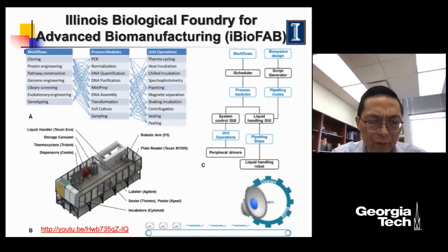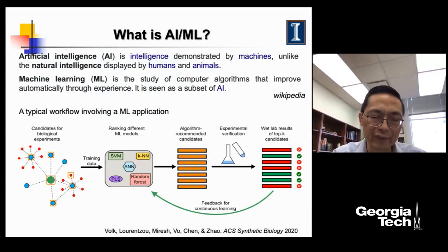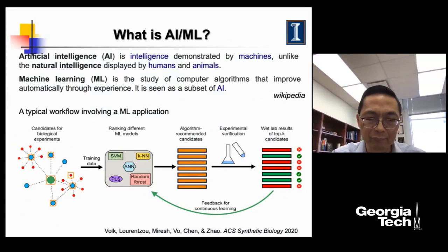This robotic system can really accelerate the work, but it cannot think by itself. That's why we thought: is it possible to combine artificial intelligence or machine learning tools with this robotic system, so that we can create a system that can self-think and conduct experiments by itself? This is challenging, but I think it's not impossible, as you will learn in a minute.